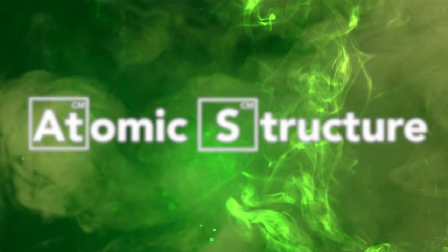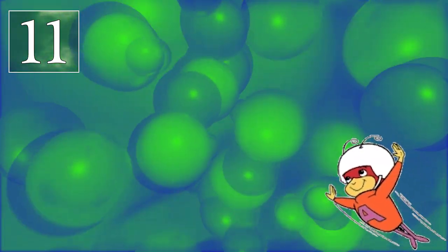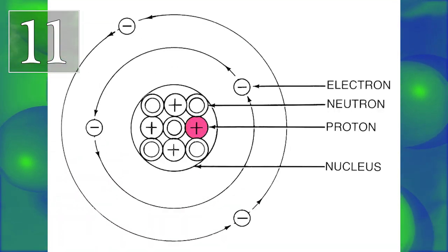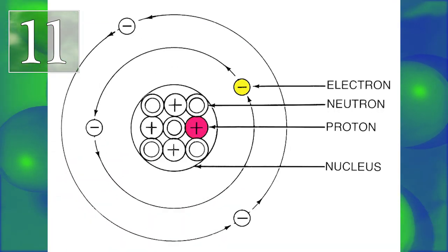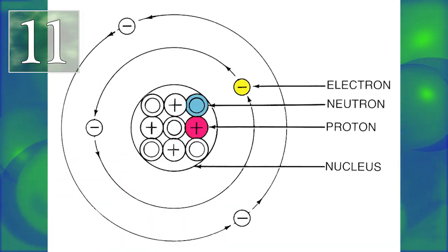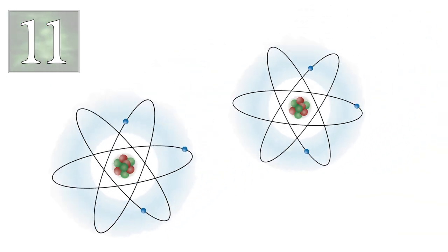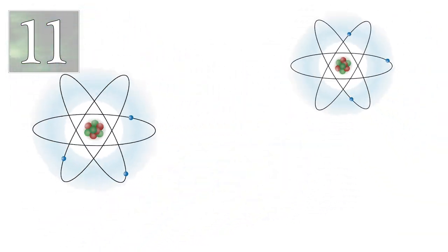Number 11: Atomic Structure. Atoms are the building blocks of all the known everything and take center stage in chemistry. There are three main parts of an atom: protons, a positive charge; electrons, a negative charge; and neutrons, the neutral charge. The varying amounts of each are what make an element an element.